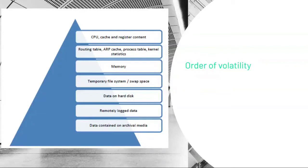There are many volatile memory units present in the system — such as CPU registers, cache memory, and RAM — each with different orders of volatility. Order of volatility specifies how sensitive the memory is towards the loss of data: the higher the order of volatility, the higher the chances of data being lost, changed, or modified. Therefore, the forensic investigator must follow the order of volatility to capture data from different memory devices. The order of volatility is shown on screen as a pyramid — the higher the level in the pyramid, the higher the order of volatility.